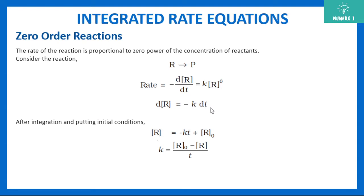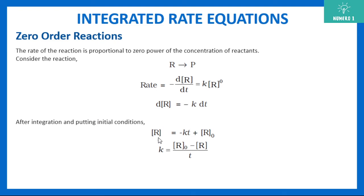This is a differential equation where the variables are separated, so simply integrate. Put the symbol of integration from R naught (initial concentration) to R as final concentration, and integrate time from t equals 0 to any time t. If you evaluate that, you get the expression, and from here k equals R naught minus R upon t. Note that R naught is your initial concentration at time t equals 0, and R is your concentration of reactant at any time t.